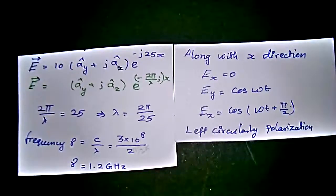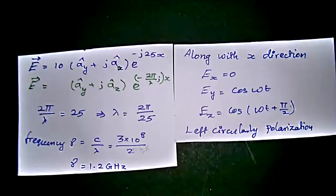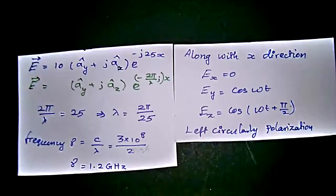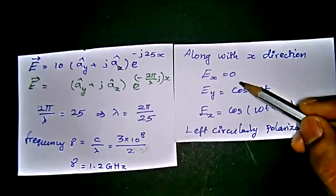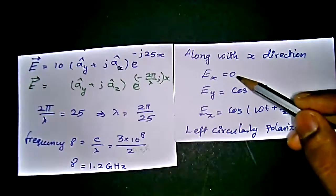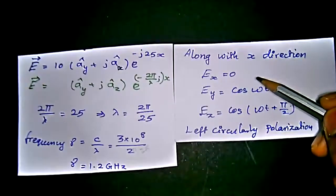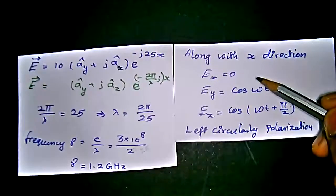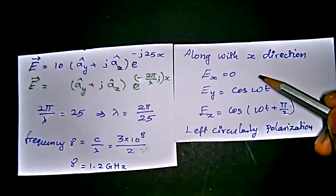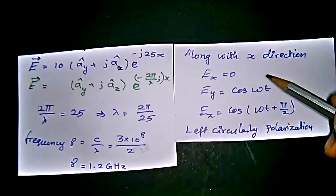We should know the theory from electromagnetics: for a wave traveling in the x direction, uniform polarization means the x-component of the electric field, Ex, equals zero. This is because the wave is directly parallel to the x direction, so there is no electric field component in the x direction. So we can say Ex = 0.